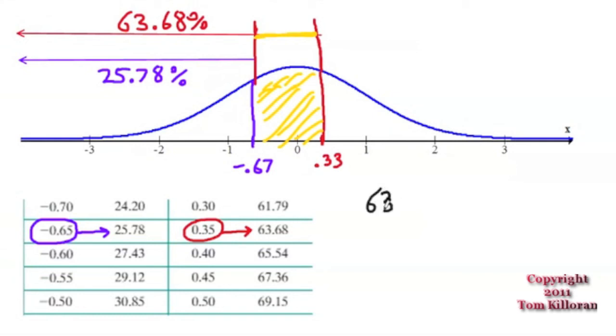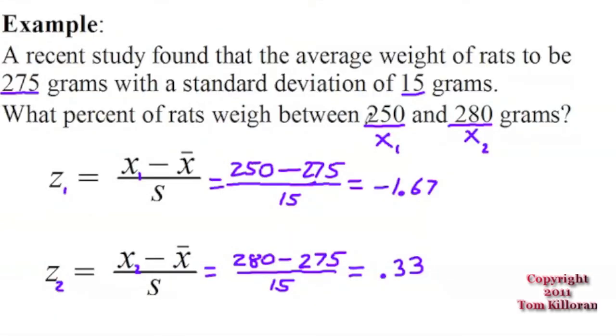So this becomes 63.68, and we're going to take away the 25.78 that we found from the tables for these two numbers. I want to keep the answer positive, so I will always do bigger minus smaller. And this tells us that there's going to be 37.9 percent of the information between these two z values. So the percent of rats that weigh between 250 and 280 grams will be 37.9 percent. And that's the answer.